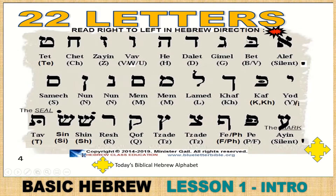The second letter is Bet when it has the dot — the dagesh — in the middle. Without the dot it is pronounced as a V. Written as a B in the word, like Devarim, but pronounced Devarim. Gimel is G. Dalet is D. He is H — it is the open H. Vav is the modern form for the sixth letter, or a W. Sometimes it will be written as W or V; W is the older way of writing it.